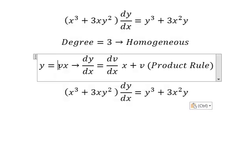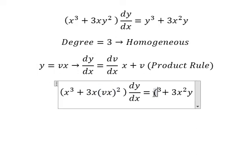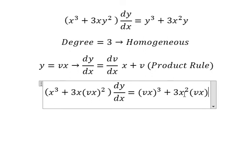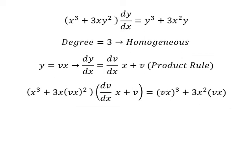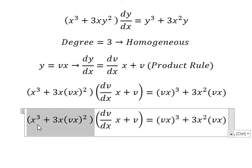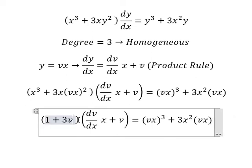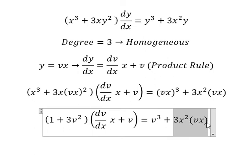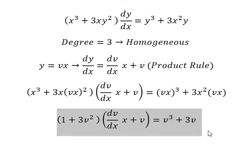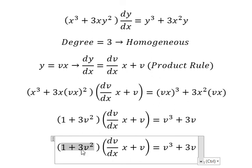This is why we replace y with v. Similarly for the other terms, we change them using the substitution. Now we simplify by canceling x to the power of 3 from both sides, then we divide both sides by 1 plus 3v squared.